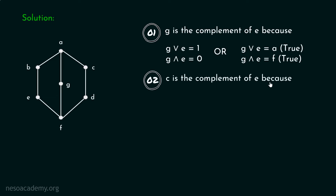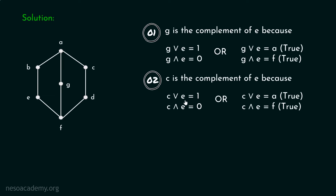C is also the complement of E, because the least upper bound of C and E is 1 (i.e., A) and the greatest lower bound of C and E is 0 (i.e., F). If you trace the path down from these two vertices C and E, they meet at F — that is the greatest lower bound. The least upper bound of C and E is A. Therefore, C is the complement of E.